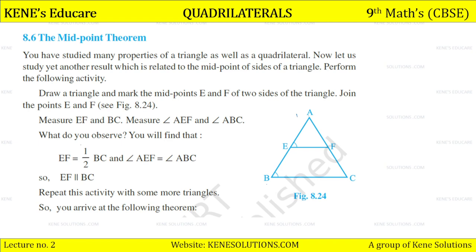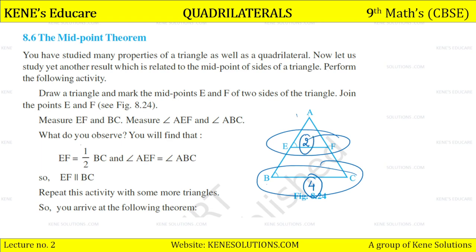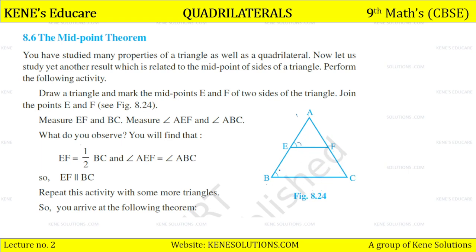You get EF is perfectly half of BC. If BC is 4 cm, then EF will be 2 cm. And angle AEF is equal to angle ABC because these two are parallel lines, so these two will be corresponding angles. And EF will be parallel to BC.